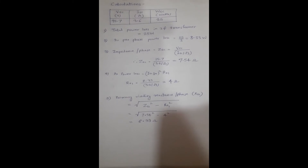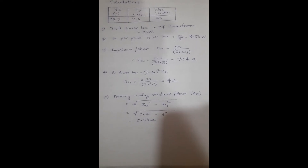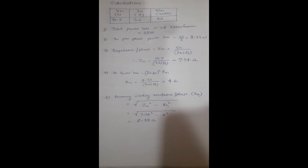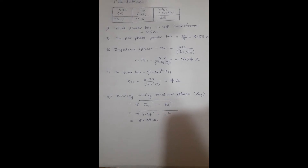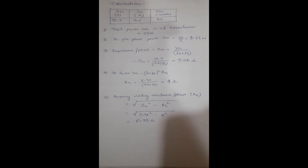With all readings in the observation table, we can find the different parameters. Total power loss in the three-phase transformer is 25 watts, so per phase power loss is 25 ÷ 3 = 8.33 watts. Since the primary winding is in delta, we calculate the per phase current accordingly. For Zsc we use the formula Vsc ÷ (Isc ÷ √3), giving Zsc = 7.54 ohms.